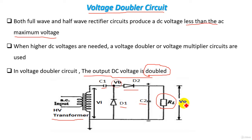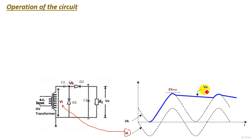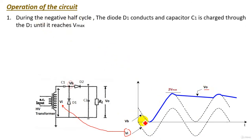Let's see the operation of our circuit. This is our circuit and this is the output waveform — the blue line represents our output voltage. The dotted sinusoidal waveform is the input voltage V_input, and the blue line is V_output. During the negative half cycle, diode D1 conducts — it will act as a short circuit, as the voltage across diode D1 is positive. Capacitor C1 is charged through D1 in that direction.